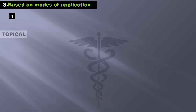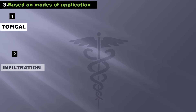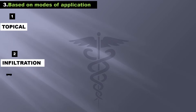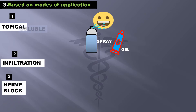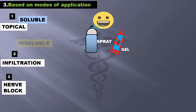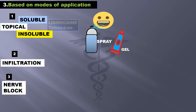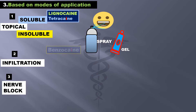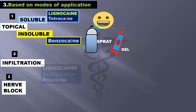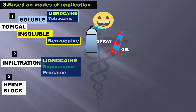The third classification is based on modes of application: topical, infiltration, and nerve block. Topical can be used as sprays and gels and are divided into soluble and insoluble. Lignocaine and tetracaine are soluble topical LAs, while benzocaine is an insoluble topical LA.